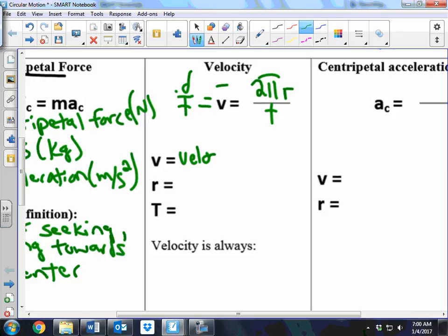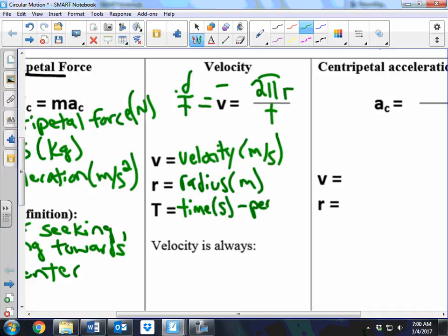So velocity, v is velocity, that's meters per second, r is radius. Remember, this has to be in meters. And then t is time. But you have to remember, time is really the period, which, as we discussed in the lab, is the time for one revolution.